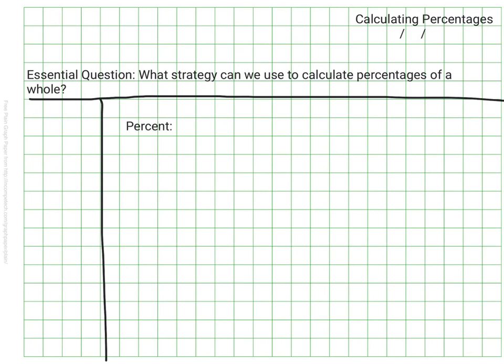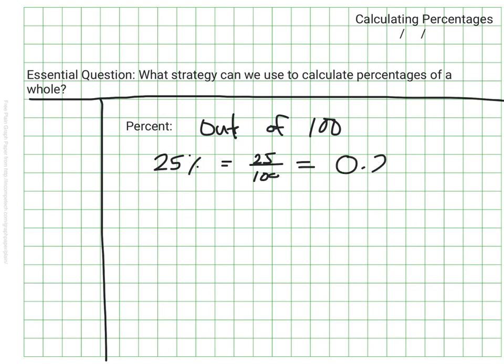Something we should know by now from our studies with percentages is that percent means out of 100. It's important particularly for the strategy we're going to talk about, because it tells us that 25% is the fraction 25 out of 100, but more importantly for this strategy, it can be written as the decimal 25 hundredths.